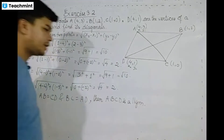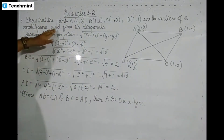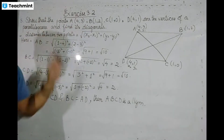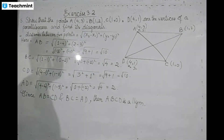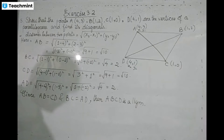Now ABCD is confirmed as a parallelogram. The question also asks us to find the diagonals. We need to calculate the length of diagonals AC and BD. First diagonal is AC, then second diagonal is BD.